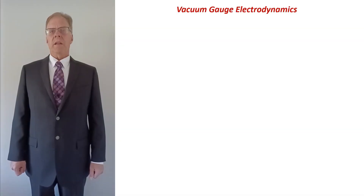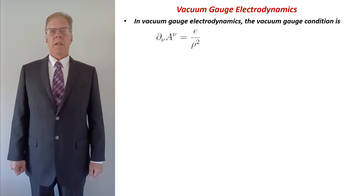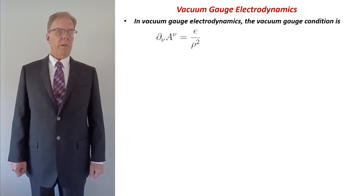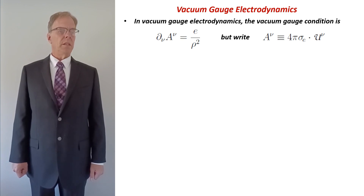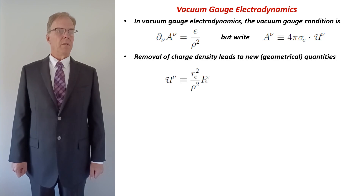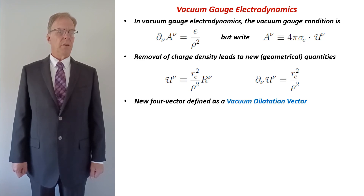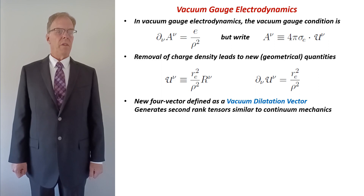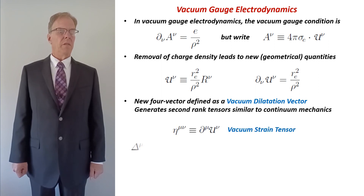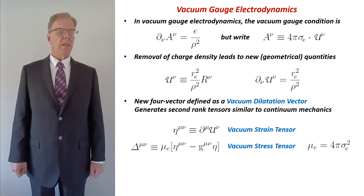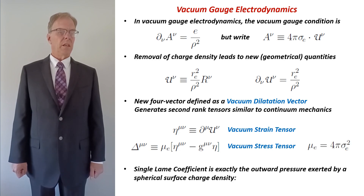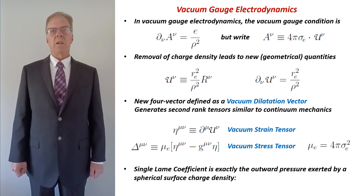The vacuum gauge is defined by the vacuum gauge condition. The potentials are null but can be eliminated completely by removing a factor of 4 pi times a constant surface charge density. The new 4-vector may be referred to as a vacuum dilatation vector and its 4-divergence is shown here. We note that the vacuum stress has only a single Lamé coefficient, which is exactly the outward pressure exerted by the surface charge density.